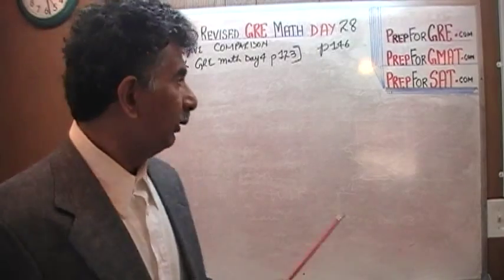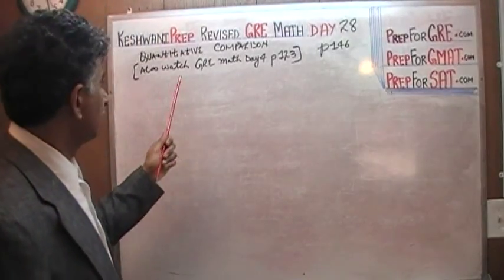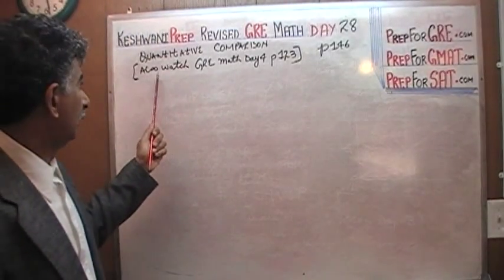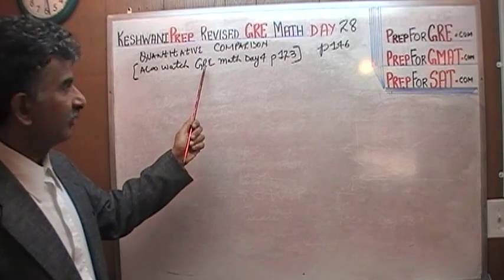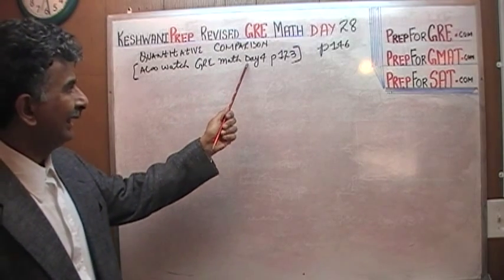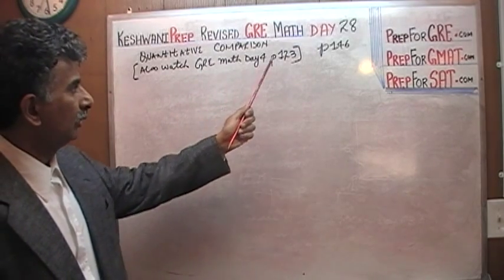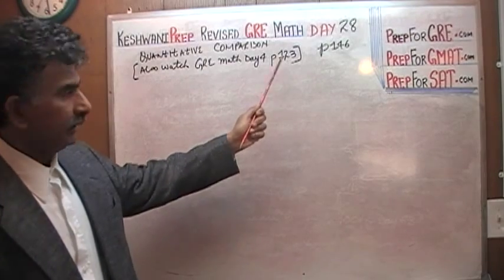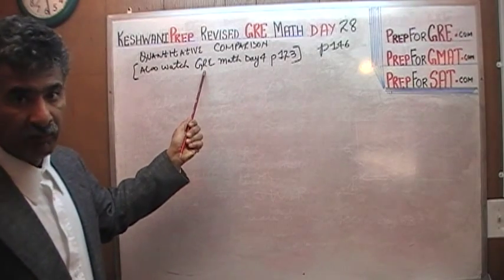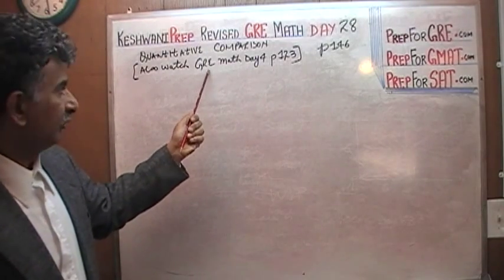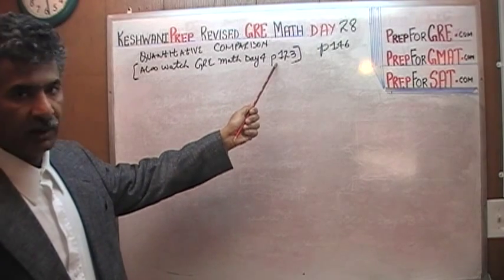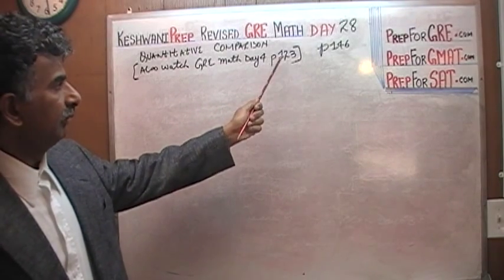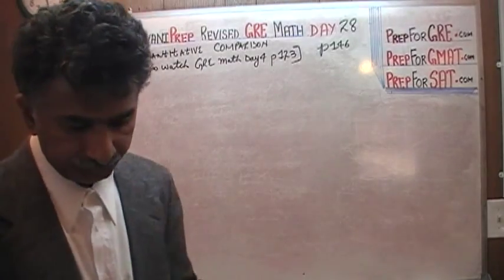In addition to the video you are watching right now, I would also like you to watch — just type in GRE math day 4, page 123. Type in GRE math as opposed to revised GRE, and type in the page number P123 without a space, and it will pop right up.